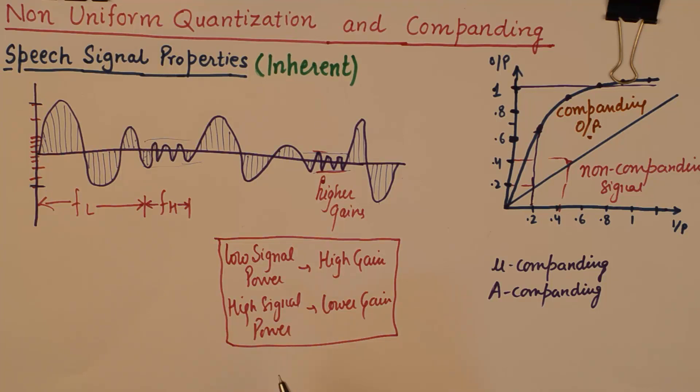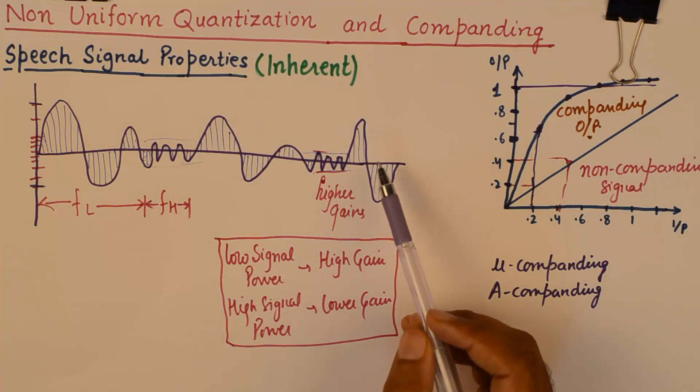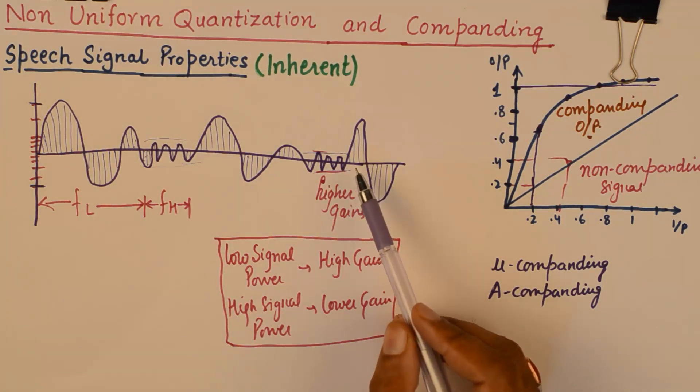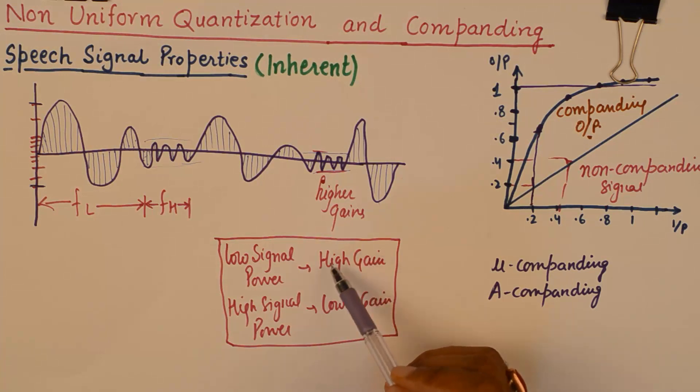We know that signals with higher frequencies travel to larger distances as compared to lower frequency signals. On the other hand, we also know that signals with higher amplitudes are more suitable to travel at larger distances. So, in order to maintain the uniformity in transmission, what we tend to do is, we tend to provide higher gains to low signal power portion of the bandwidth.